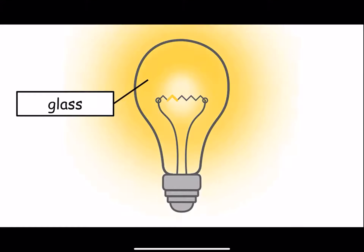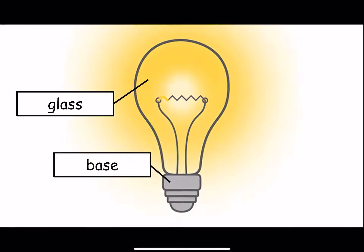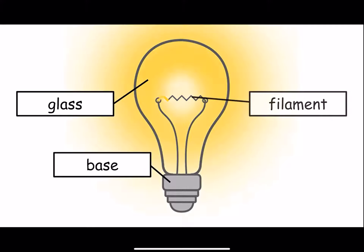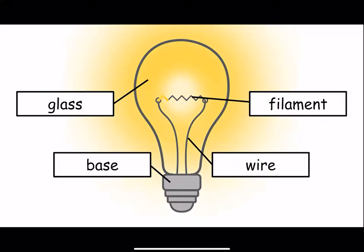There's the glass, the base, the filament, and the wire. There are more parts to a light bulb — these are just the four that we talked about in class. If you need a moment to write these words down, you can pause the video.